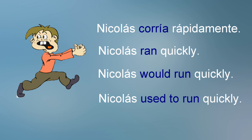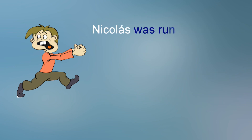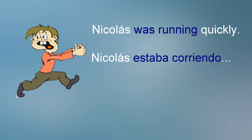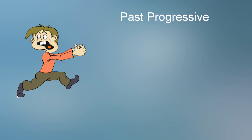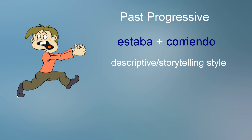Many students will point out that this is the past progressive and could be expressed as Nicholas estaba corriendo rápidamente — and they would be right. However, it is perfectly legitimate to interpret Nicolás corría rápidamente as 'Nicholas was running quickly,' due to the ongoing nature of the imperfect tense. The past progressive with its use of estaba and corriendo is more of a descriptive storytelling style. Insisting that it must be used to express 'was running,' and that using just corría is incorrect, is itself incorrect and falls into the trap of insisting that Spanish and English must match up word for word.